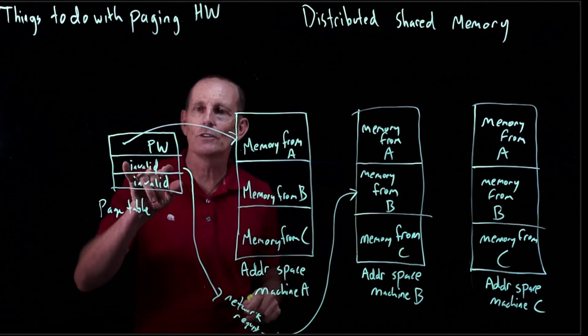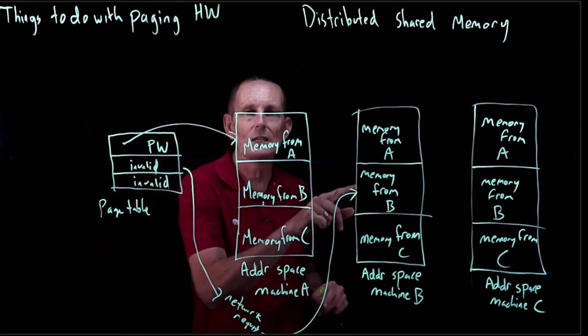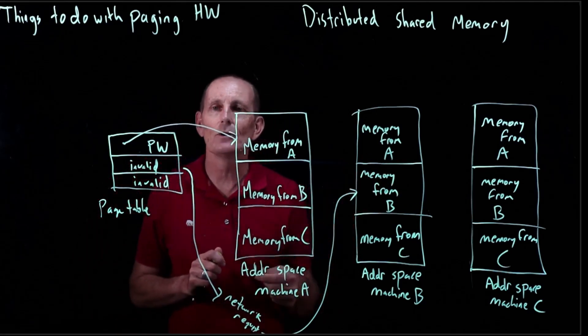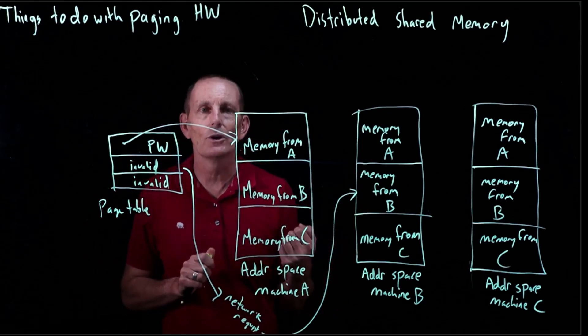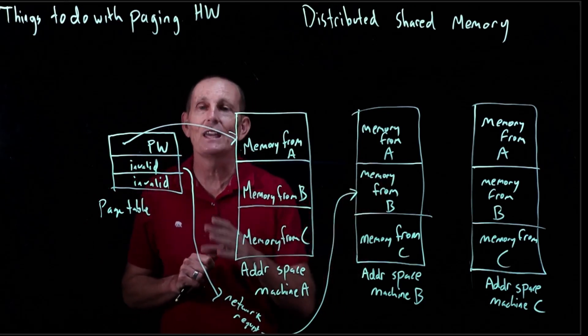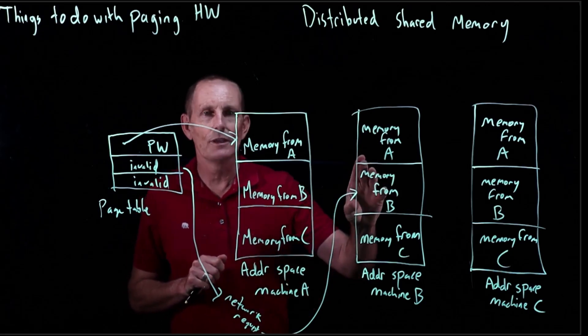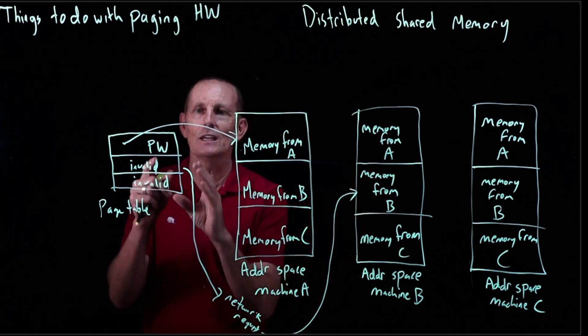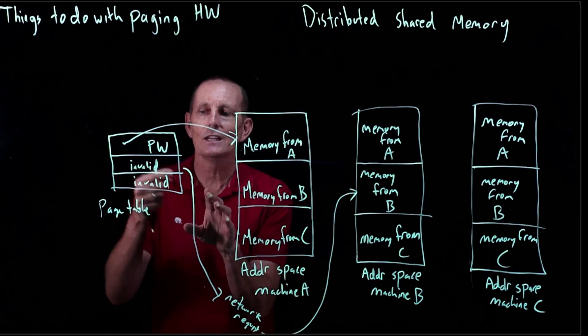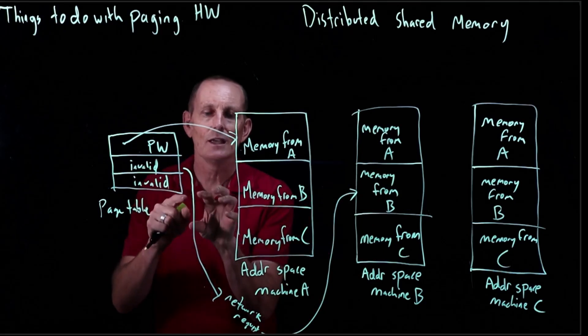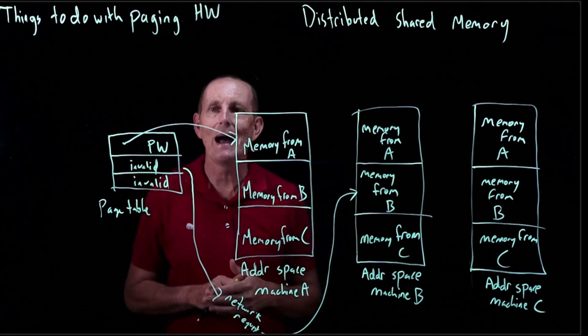So when it gets a page fault, it would go ahead and ask B and it would either read or write a particular byte or word, or more likely read or write a page at a time so that we can have some batching. So it goes out and takes a page, creates a local version of the page, allows reading and writing to happen, and then we'll copy that page back, let's say.